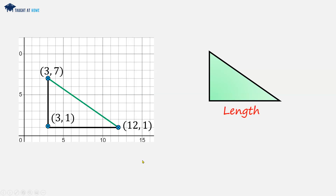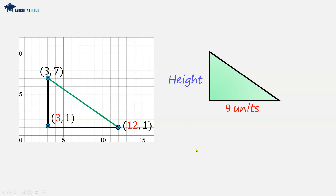So we can calculate the length of this triangle, and we do this by subtracting the x values of the coordinate points of these two corners. So we are doing 12 take away 3, which is 9. So 9 units is the length. Now we can calculate the height of this triangle. We do this by subtracting the y coordinate values, so 7 take away 1, which is 6 — 6 units.